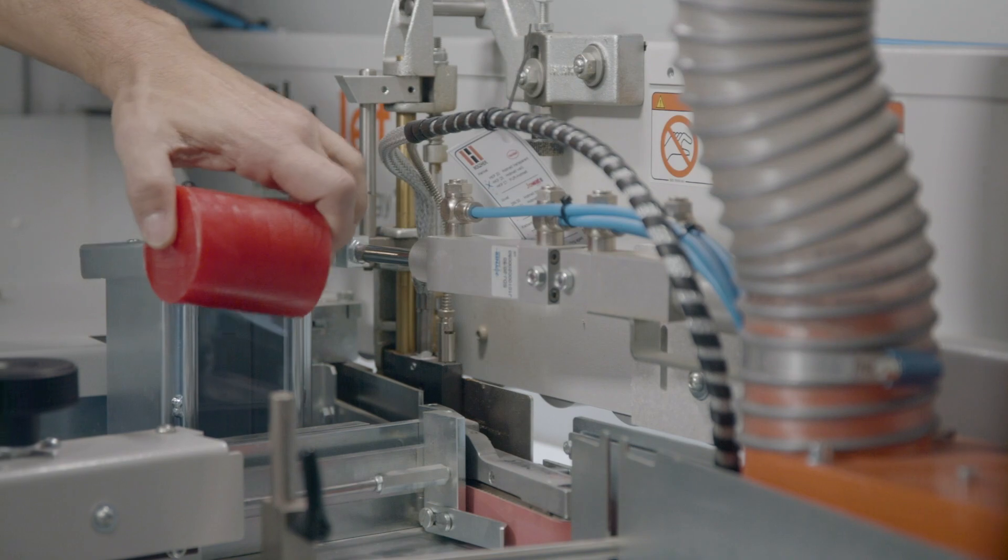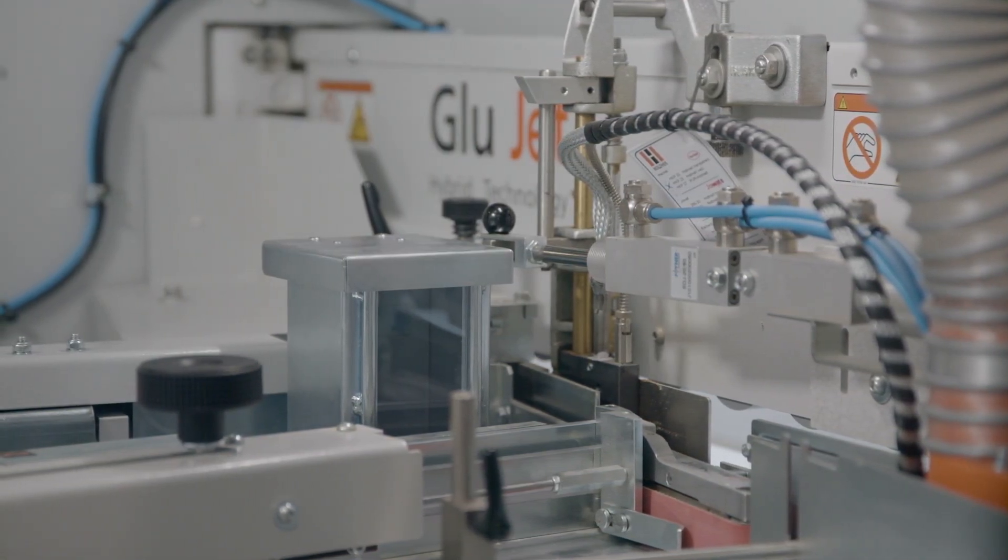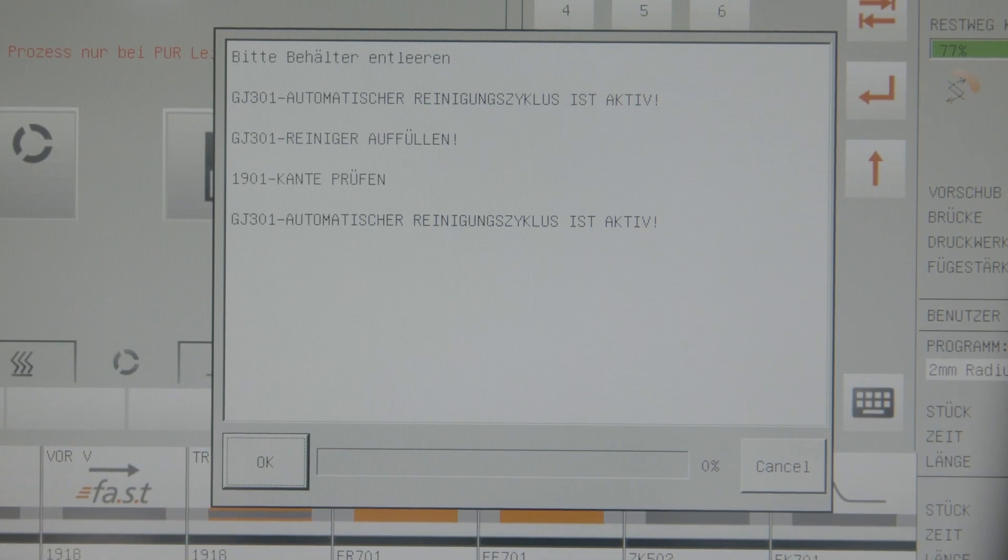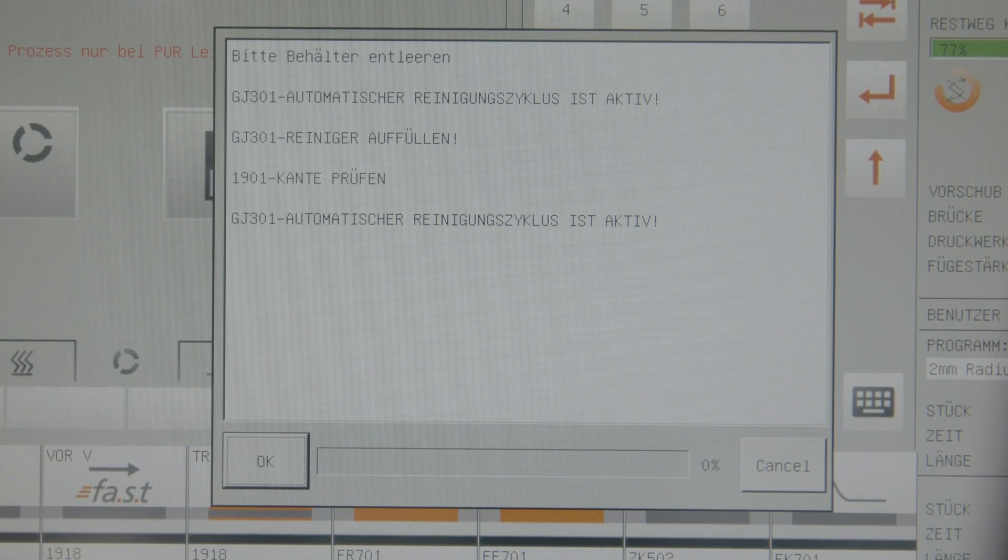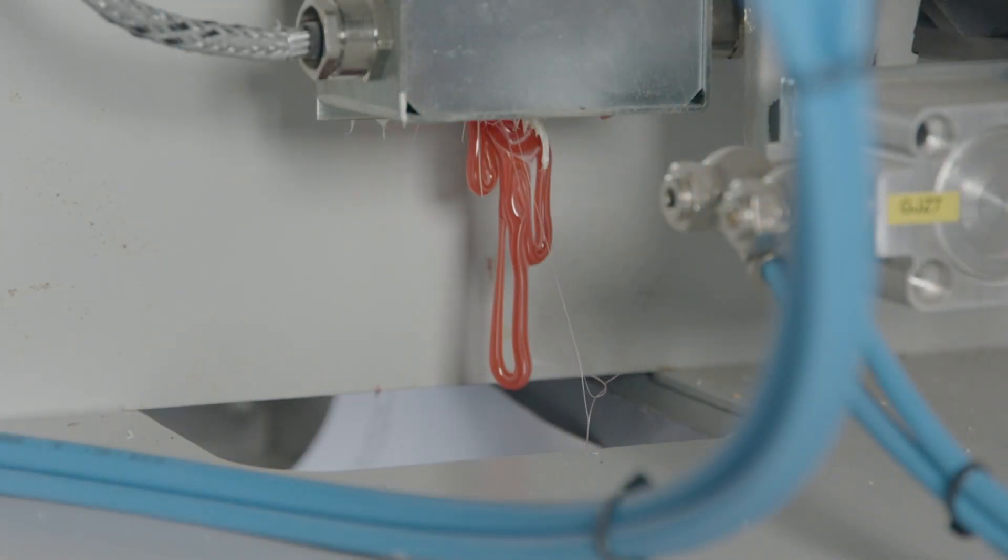Afterwards, usually before the weekend, the complete system is rinsed fully automatically with the correct pressure, temperature, and amount of cleaner. There is no easier or safer way to handle polyurethane adhesives, making GlueJet the best PUR system on the market.